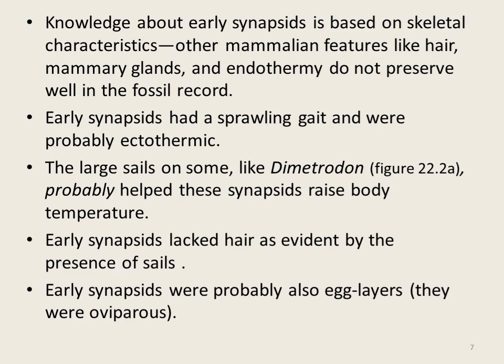Some early synapsids, or pre-mammalian synapsids, had a sail on their back — such as Dimetrodon — which they used as a thermoregulatory device for maintaining body temperature. Body hairs were absent in early synapsids. In addition, early synapsids were egg-layers or oviparous, meaning the parents produced offspring by laying eggs which were then hatched, just like birds.